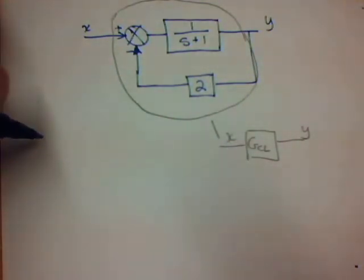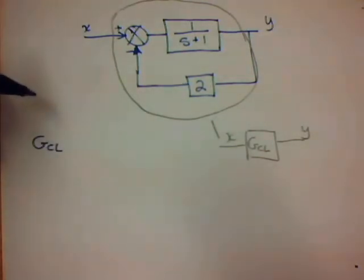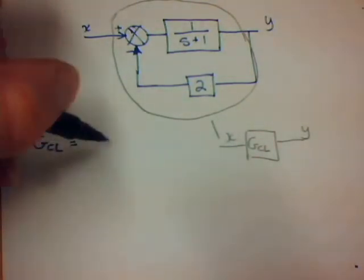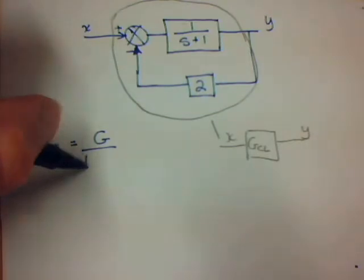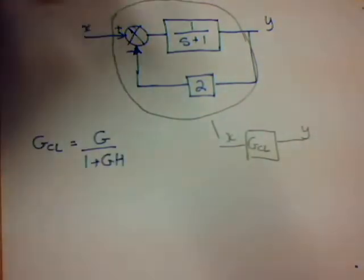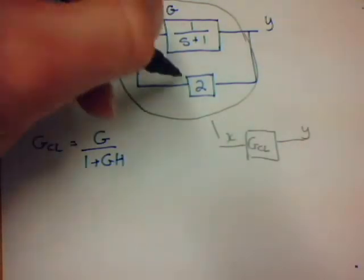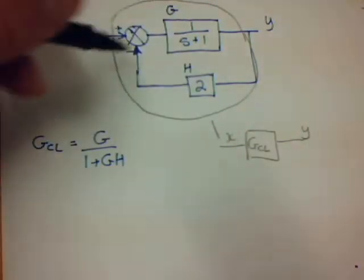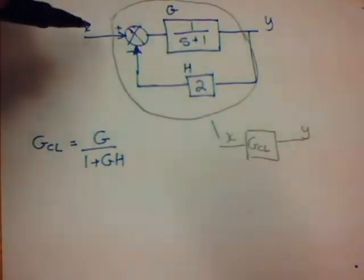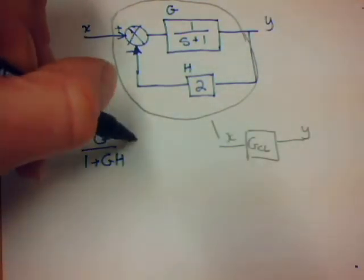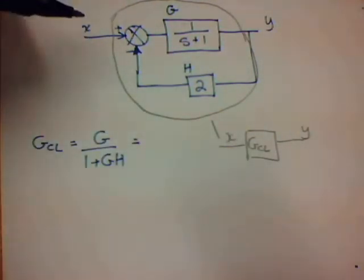We can write G of CL, the closed loop, as G over 1 plus GH. Just to clarify, G is the forward transfer function, and H is the value of the feedback. So I can rewrite that as G over 1 plus GH.